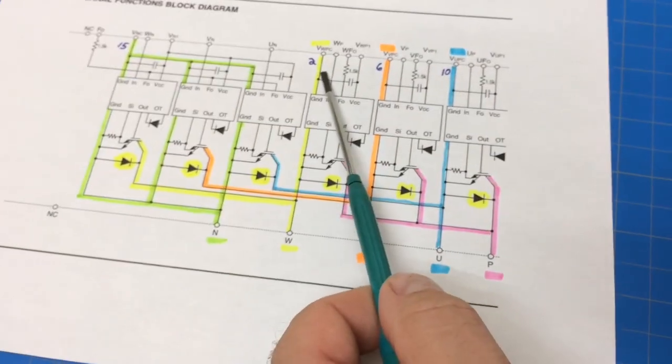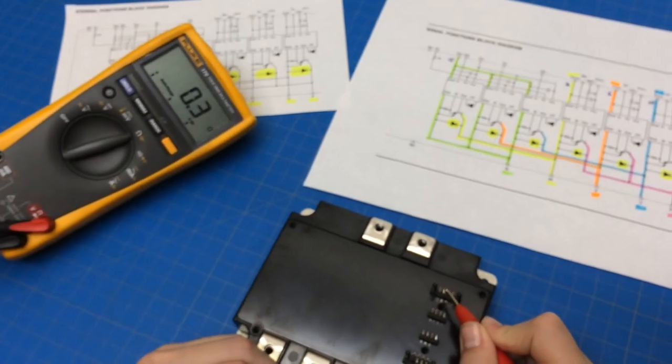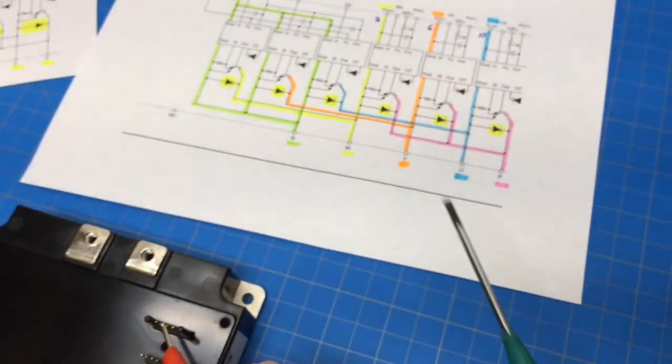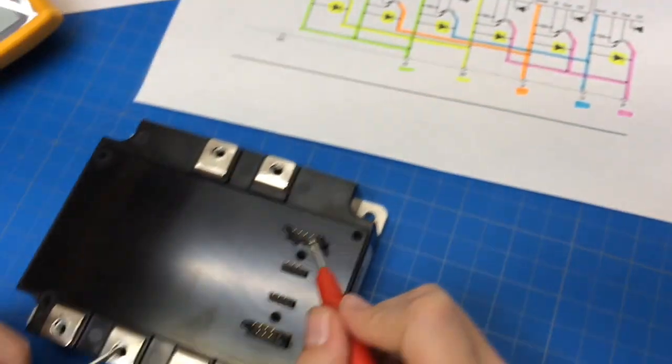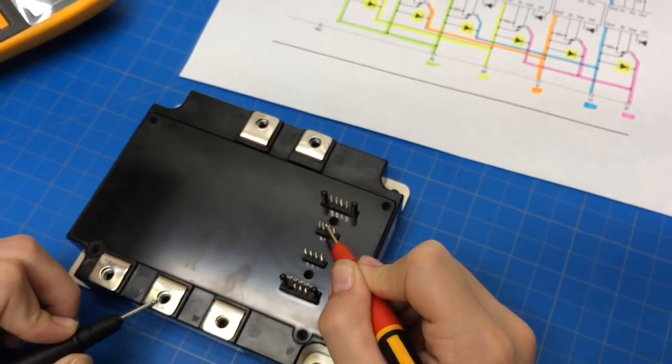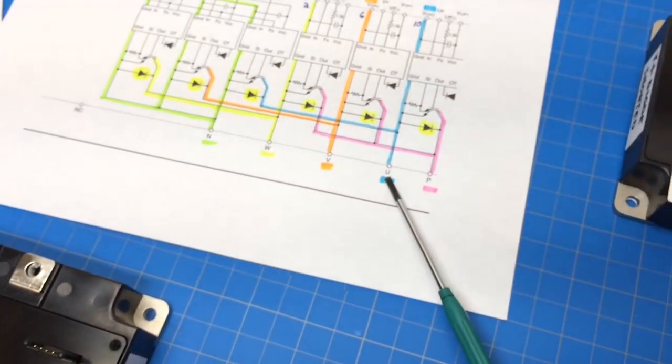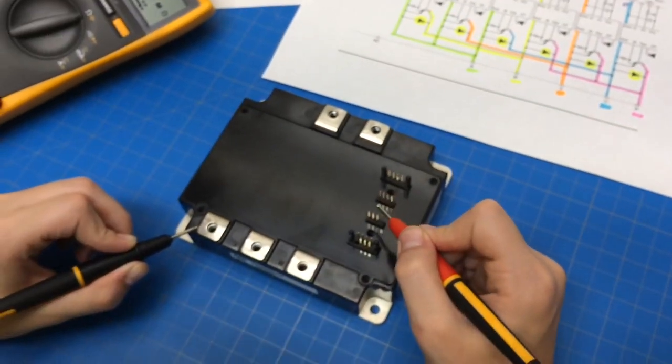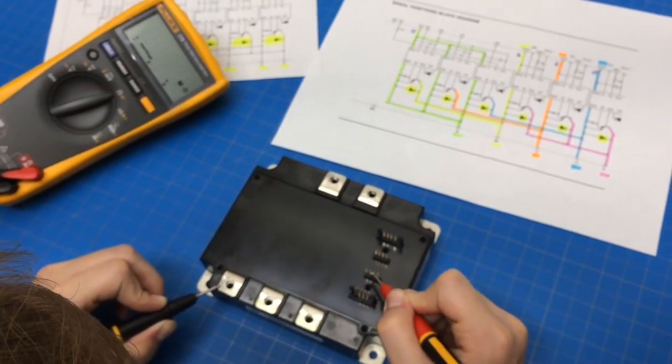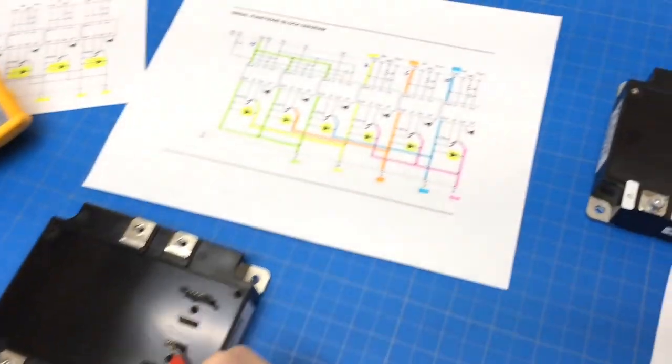Let's start with W, pin 2. Alright, so, the second one in, and you should read 0.3. Almost a dead short, that's good. Now go to V and 6, and that's going to be the second one in right there. Try and only touch one pin. Okay, now go to U, and go to pin 10. And that one's good too.